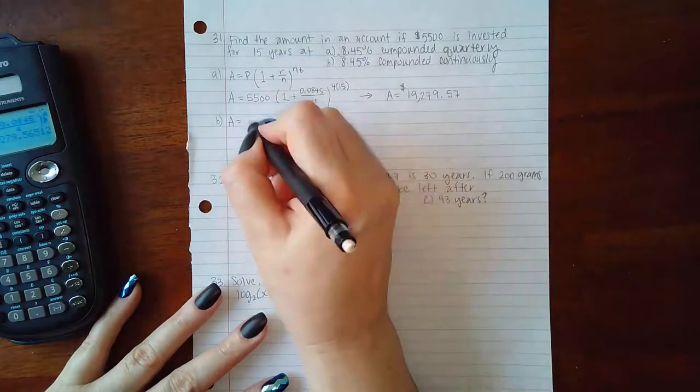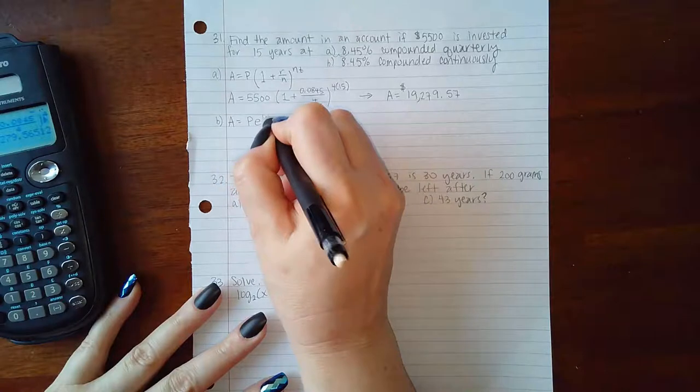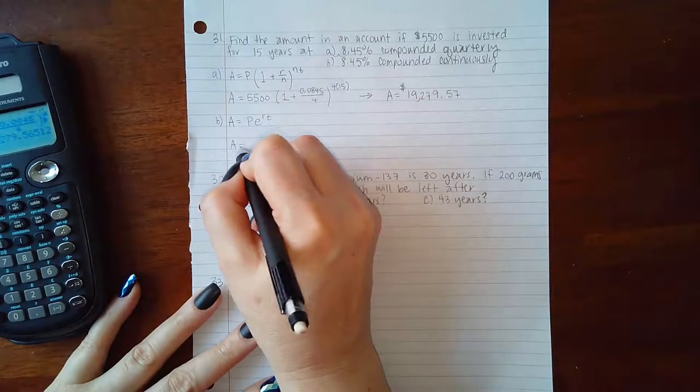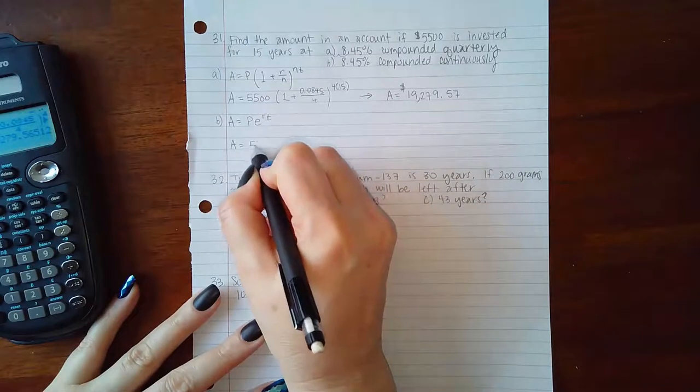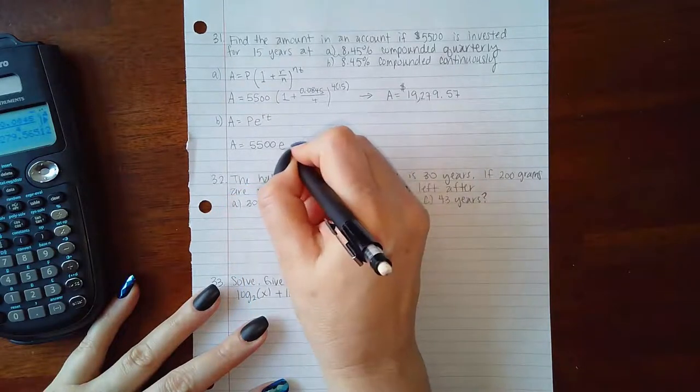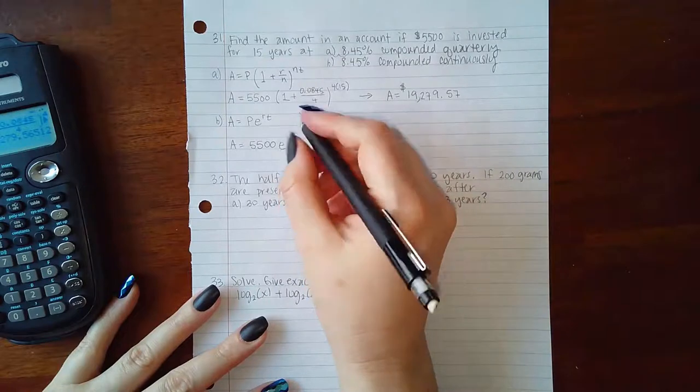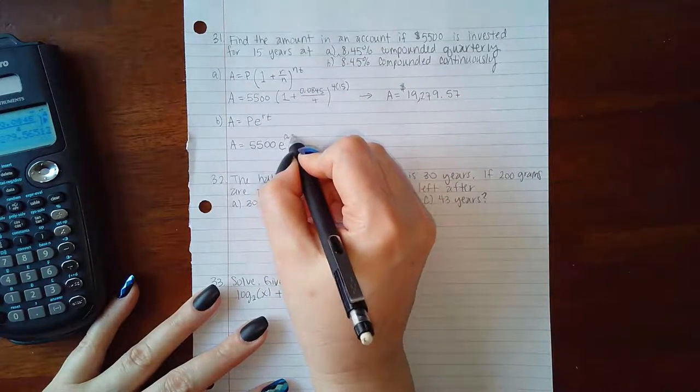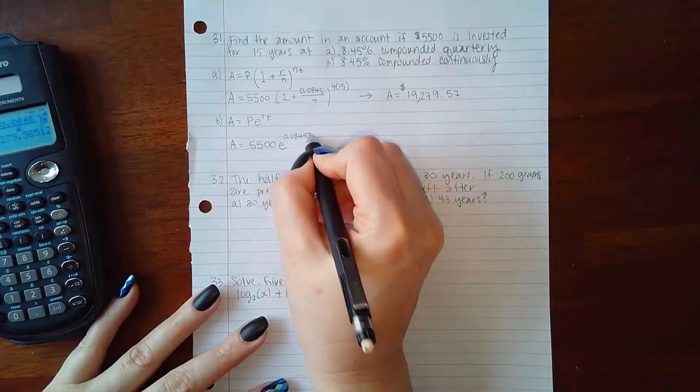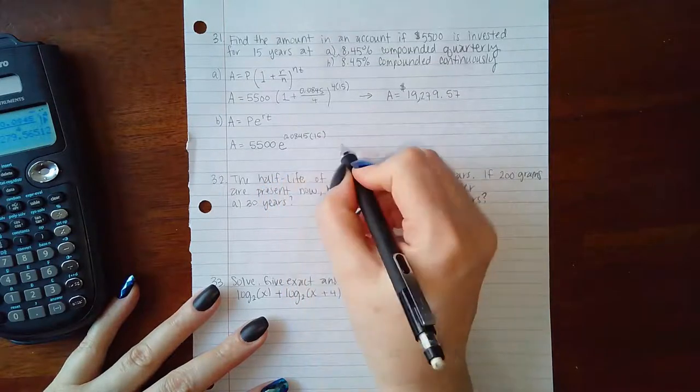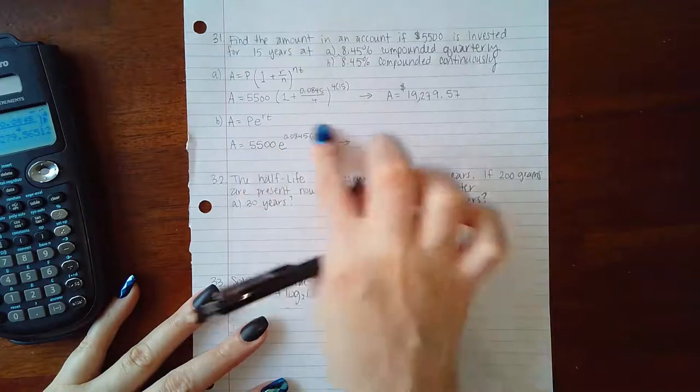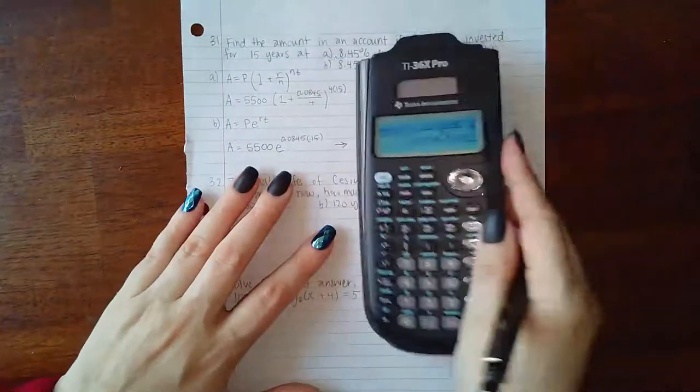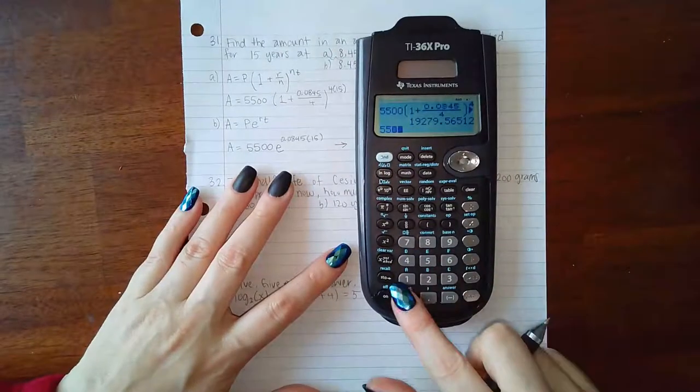Now for part B, we're going to use a different formula because it's compounded continuously. The formula is A = Pe^(rt). A I do not know, P is my initial investment which is 5,500, e is a number in the calculator 2.78 and keeps going, rate is 0.0845, and time is 15. Again, all of these are numbers, so I can type that all into the calculator.